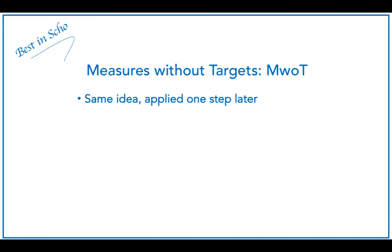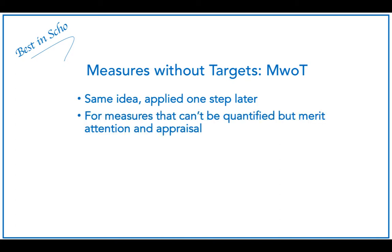By extension of the objectives without measures approach, let me quickly mention measures without targets, or MWOT. It is essentially the same idea, just applied one step later. Just as it sounds, measures without targets is aimed at measures that can't be quantified into a numerical target but merit attention and appraisal nonetheless. Keep in mind it's the management discussions and decisions for improvement that can be just as rich as any discussions around quants.